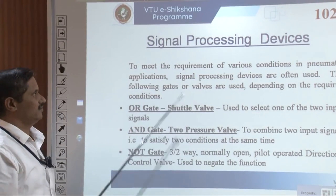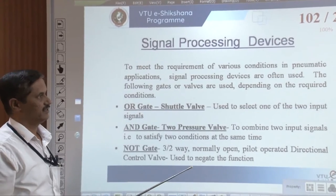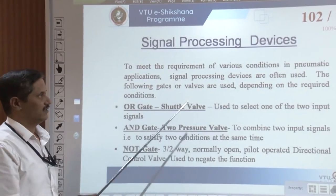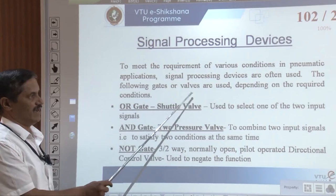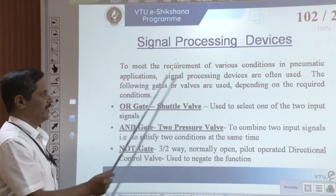Now in this session, I will be covering signal processing devices which are used in pneumatic circuits — AND valve, OR valve, NOT valve. These kinds of valves are extensively used in logical operations of pneumatic circuits. To meet the requirements of various conditions in pneumatic applications, signal processing devices are often used. The following gates or valves are used depending upon the required conditions.